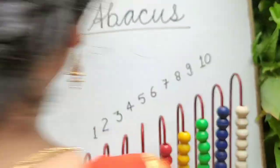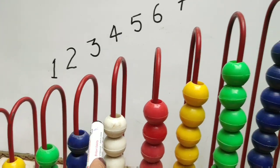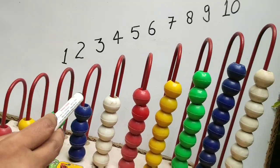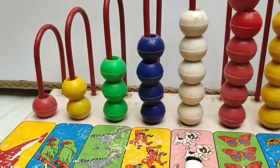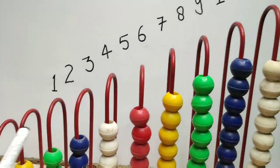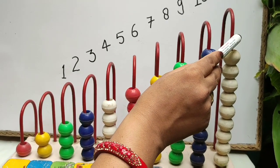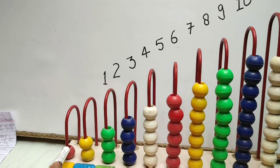We will learn today addition with abacus. Let's start. On an abacus, every rod signifies a number which can be known by counting the number of beads on them. Let me introduce you to an abacus. This abacus has ten rods: one, two, three, four, five, six, seven, eight, nine, ten, and it signifies numbers from one to ten.